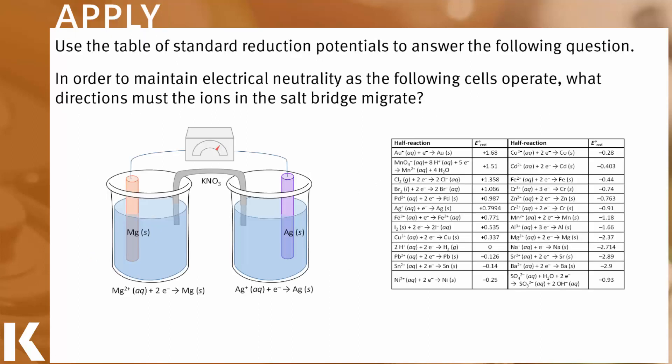Looking through this example, we can talk through these ideas in particular. From our table of reduction potentials, we see that the reduction potential of the silver half reaction is greater than the reduction potential of the magnesium half reaction.